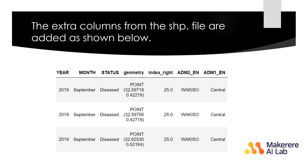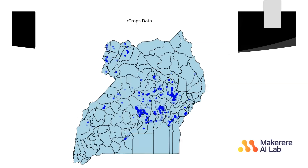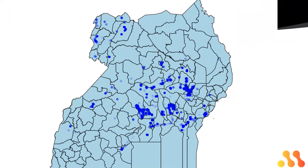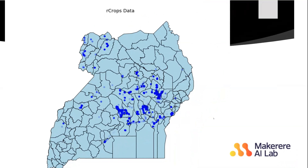Now for the visualizations. This is our crops data — a basic visualization of the different points where farmers were sending data from. You can clearly see where the data is coming from and which areas are concentrated. However, this map is not interactive — I can't zoom in to see exactly the point where a farmer is coming from.